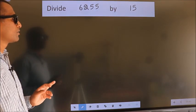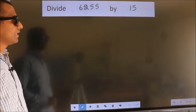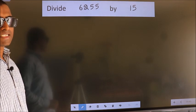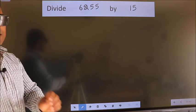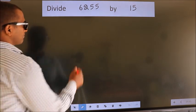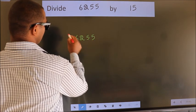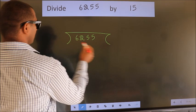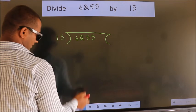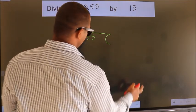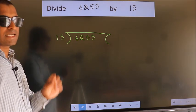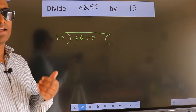Divide 6255 by 15. To do this division, we should frame it in this way. 6255 here, 15 here. This is your step 1. Next.